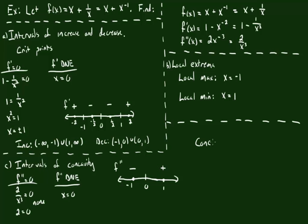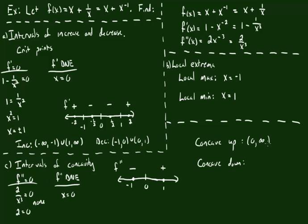So when we talk about concavity: everything from 0 to infinity is going to be concave up, because it has a positive second derivative. Everything from negative infinity to 0 is going to be concave down, because it has a negative second derivative. The point x equals 0 is not included in either interval, because it's a vertical asymptote and the second derivative does not exist there.